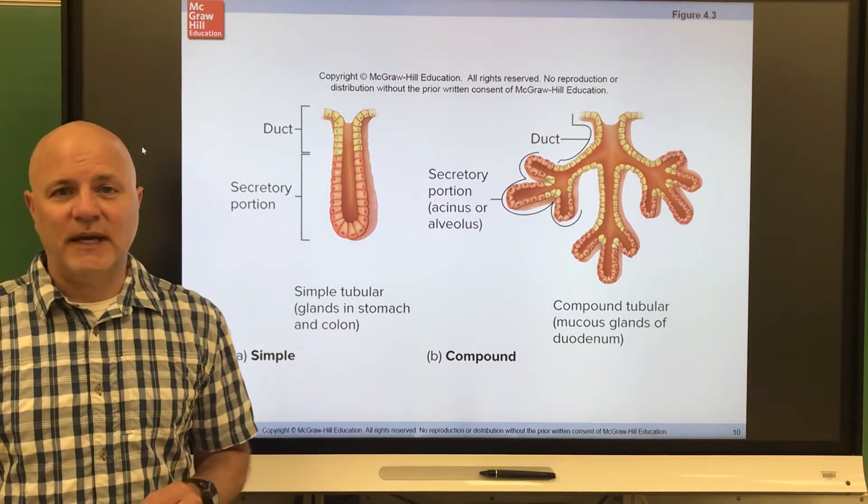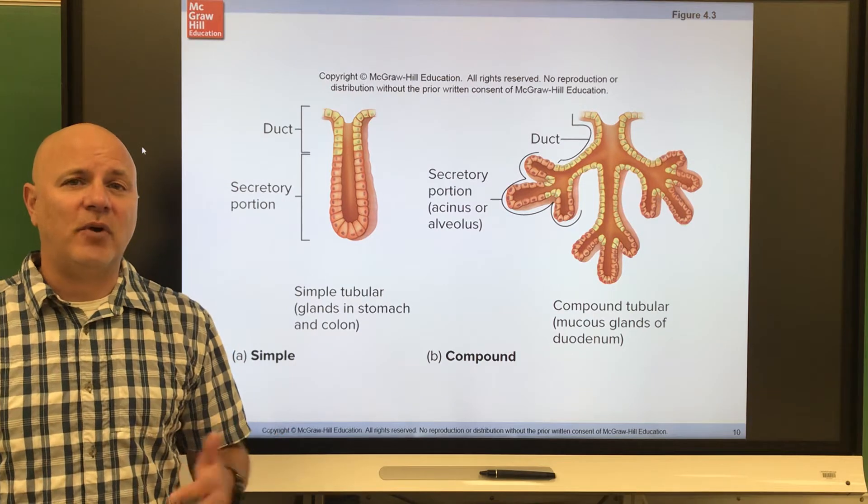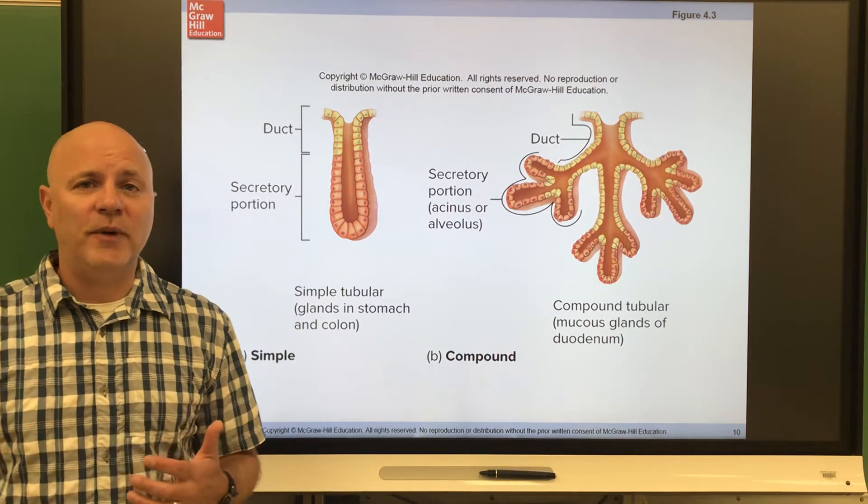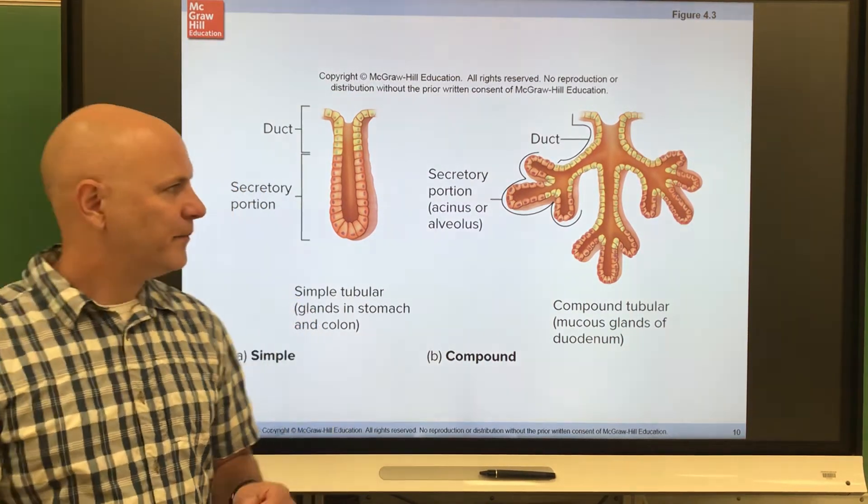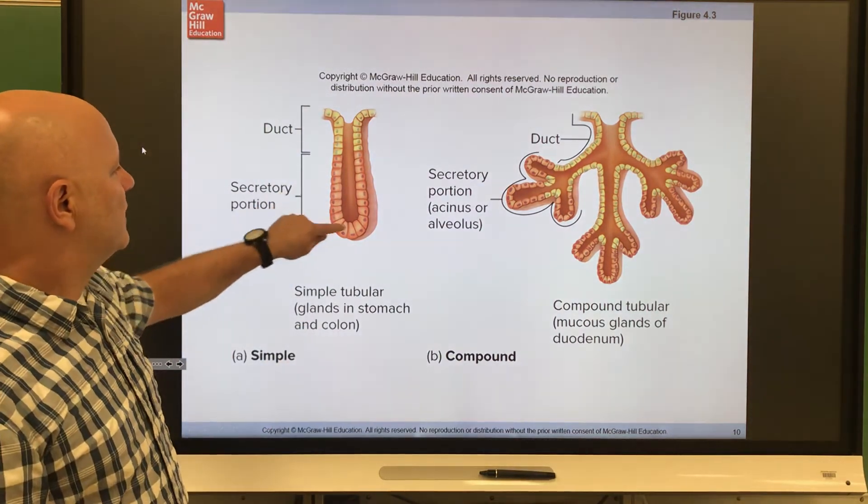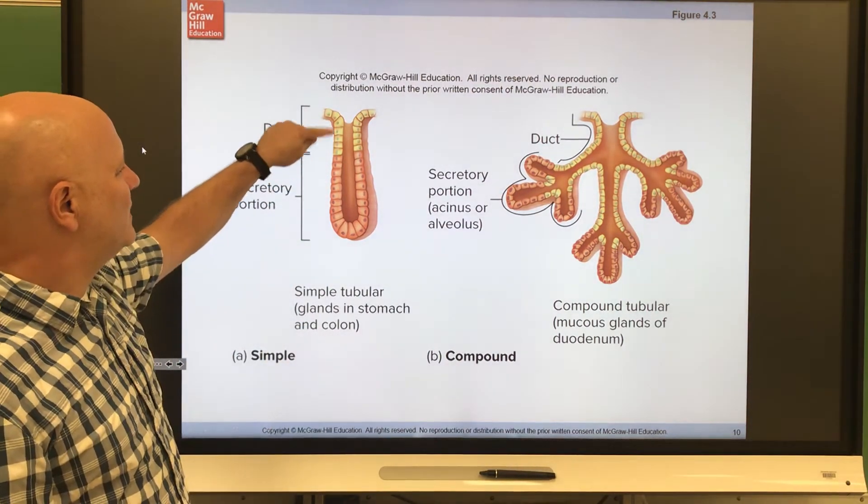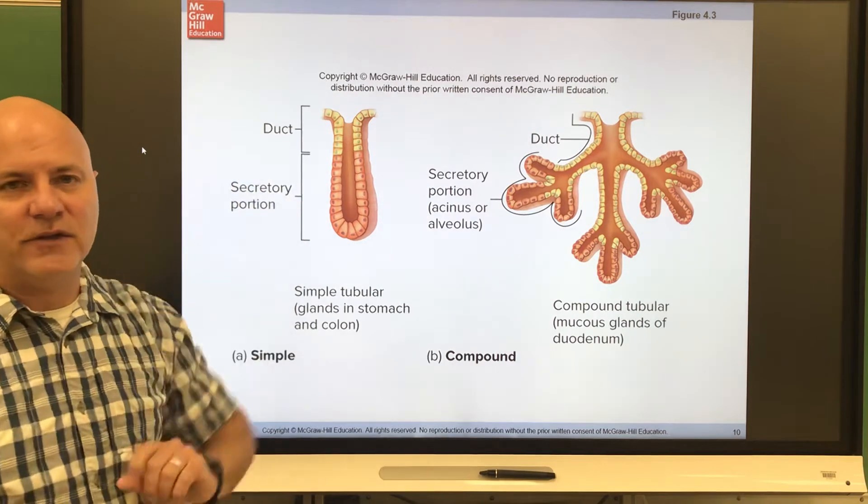Next are exocrine glands. Exocrine glands are glands that secrete their products into ducts that open to some either internal or external body surface. So here is the gland, here's the duct. These cells are not producing the secretion.